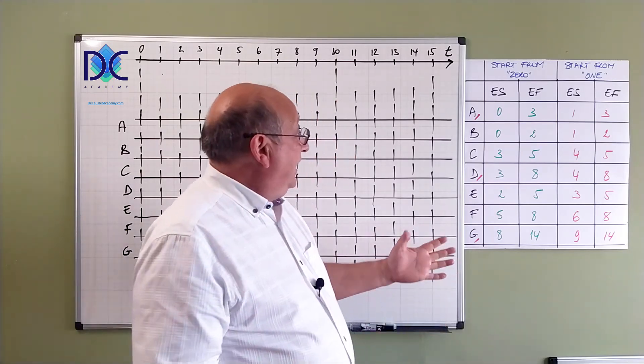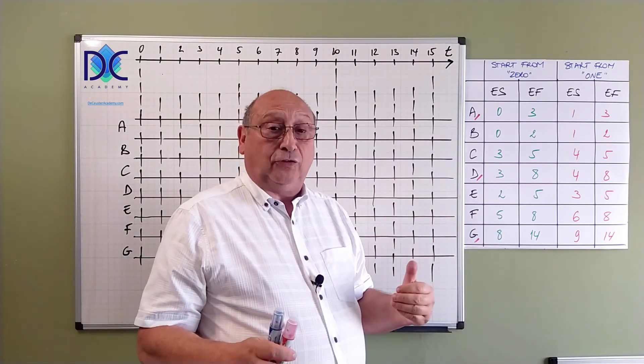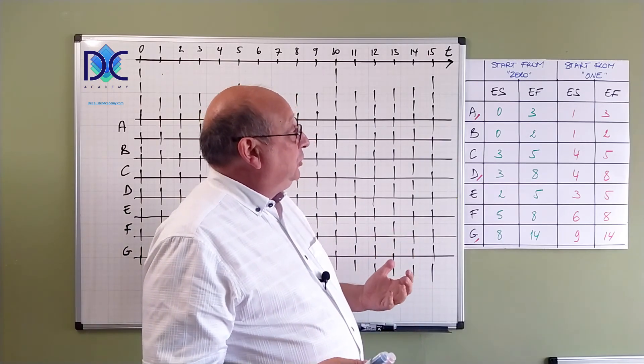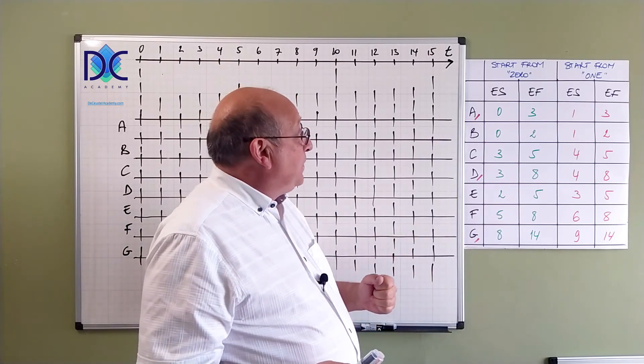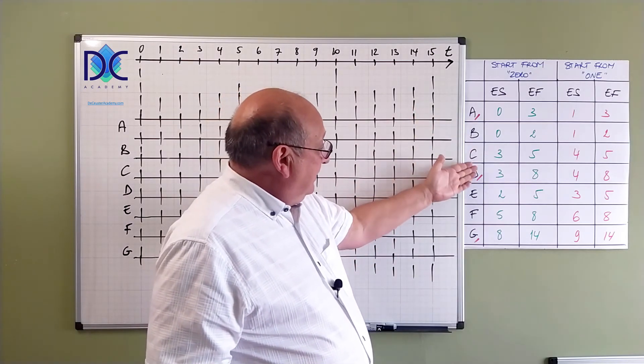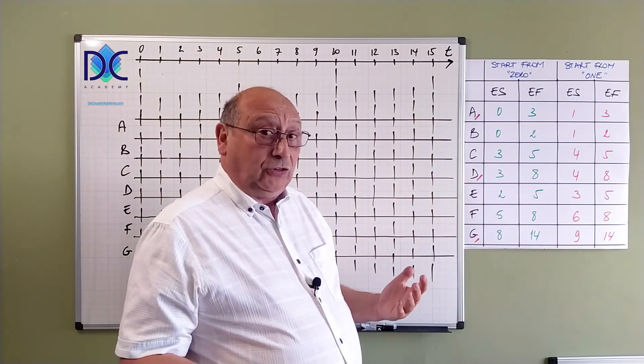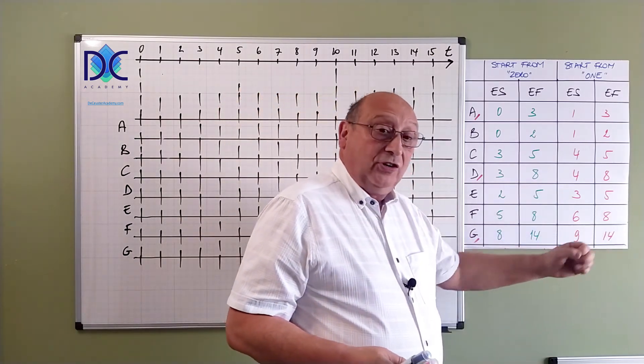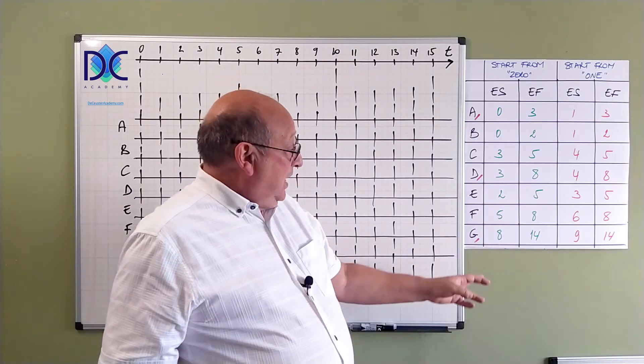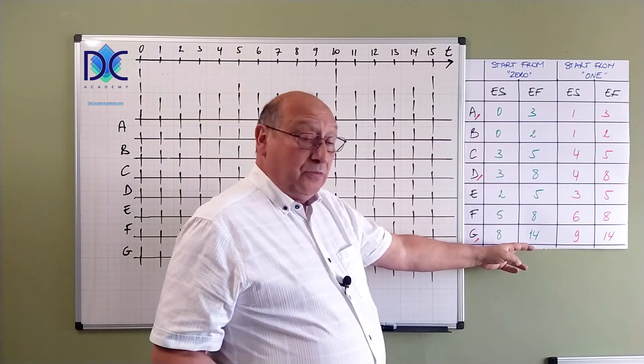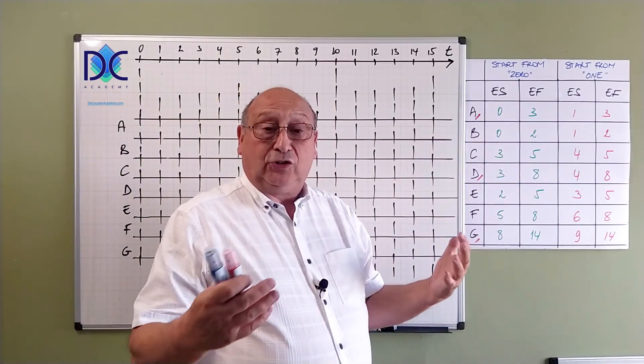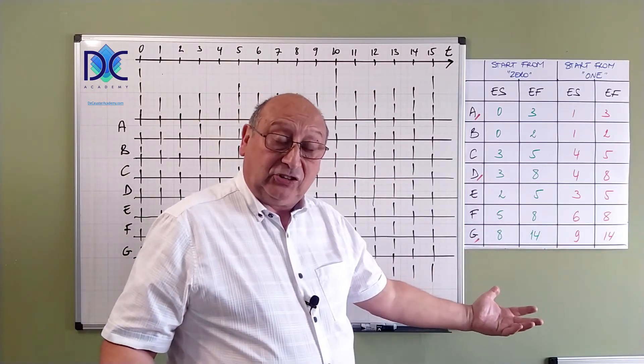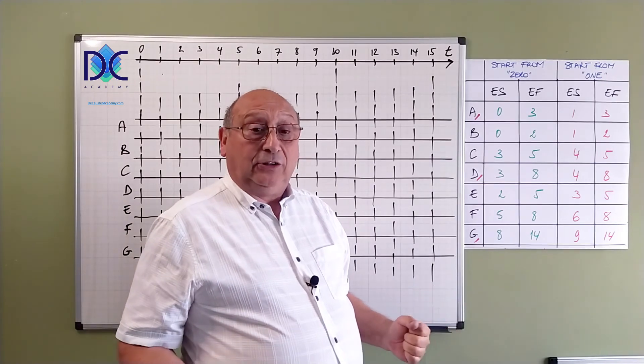In the table here, I have summarized these results for the early start and the early finish positions of the activities. A, D and G are on the critical path and in both cases, the critical path is the same. The final duration is 14. When we start from zero, the duration is 14. And here we have 14 periods that it takes to complete the project.